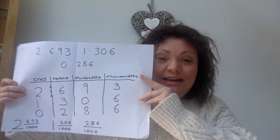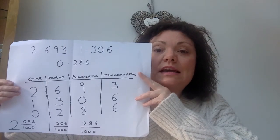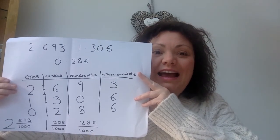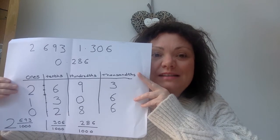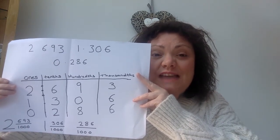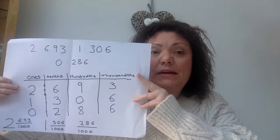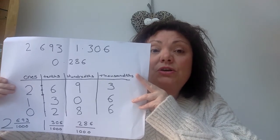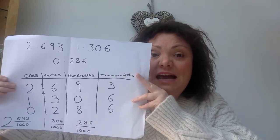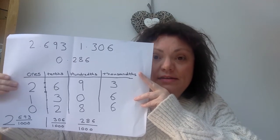I am putting them in my place value chart. The first one I'm looking at is 2.693. We've got our columns: ones, tenths, hundredths, and thousandths. So I've got two wholes, six tenths, nine hundredths, and three thousandths.